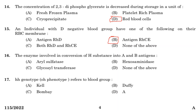Sixteenth question: the enzyme involved in conversion of H-substance into A and B antigens. Option A: aryl sulfatase. Option B: hexosaminidase. Option C: glycosyl transferase. Option D: none of the above. Answer is Option C, glycosyl transferase. The gene that determines human ABO blood type is located on chromosome number 9 and is called ABO glycosyl transferase.